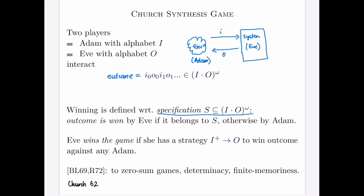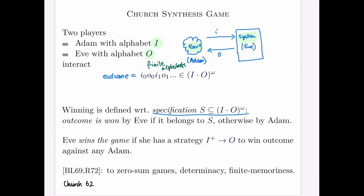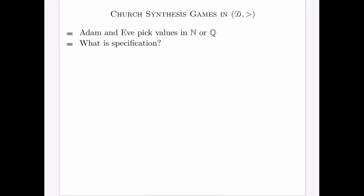This problem corresponds to the synthesis of systems. Eve represents the system and Adam represents the environment. The environment provides inputs and the system responds with outputs. We want to automatically construct such a system given the specification over inputs and outputs. In the original Church Synthesis problem, inputs and outputs are finite alphabets. However, in real life, systems often interact with the environment using infinite alphabets. For that reason, we are interested in Church Synthesis games that operate on infinite domains.